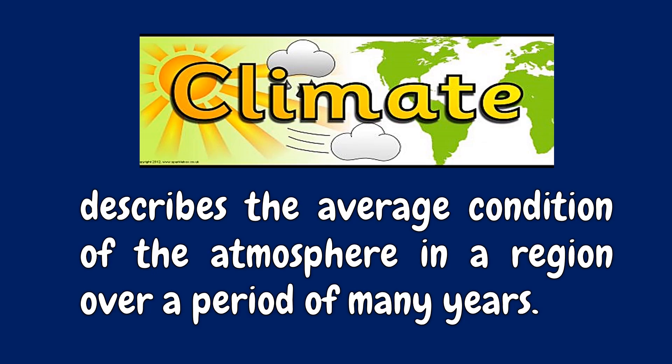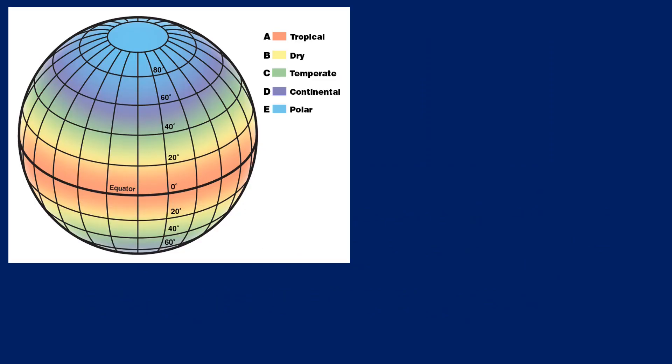Climate is the average weather conditions in a place over a long period of time — 30 years or more. There are lots of different types of climates on Earth. For example, hot regions are normally closest to the equator. The climate is hotter there because the sun's light is most directly overhead at the equator. The North and South Poles are cold because the sun's light and heat are least direct there. Using this information, in the late 1800s and early 1900s, a German climate scientist named Vladimir Köppеn divided the world's climate into categories.